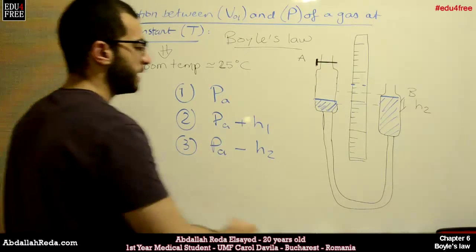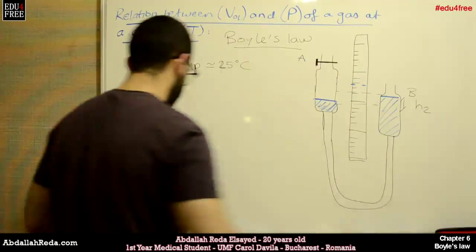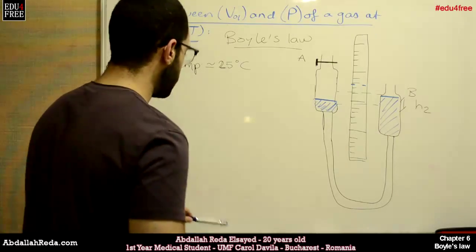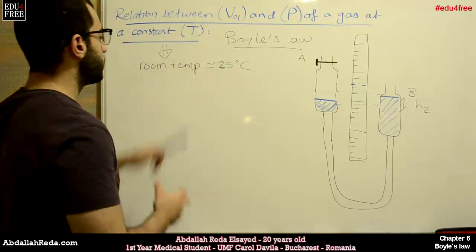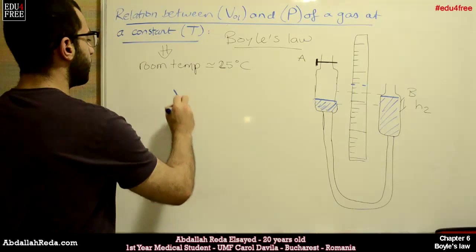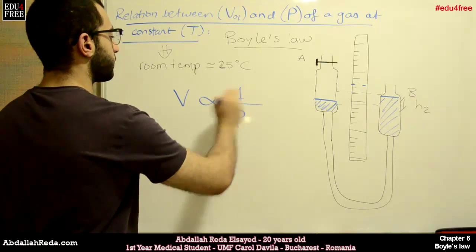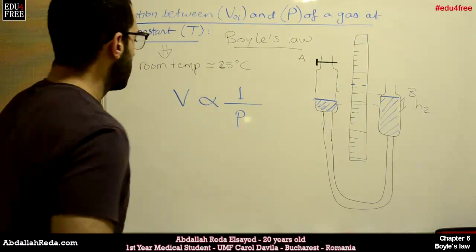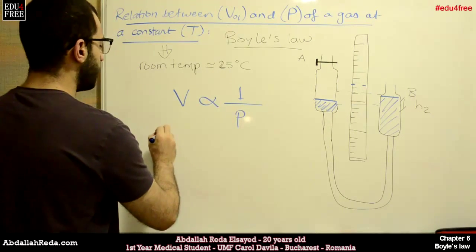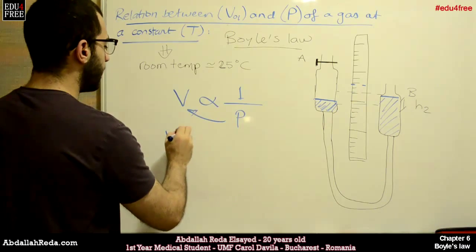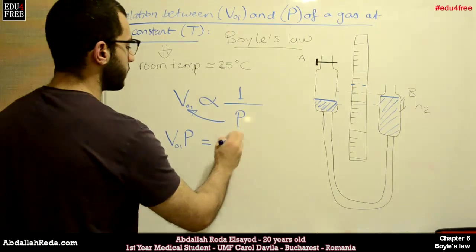So we deduce from that that there is an inversely proportional relationship between the volume of a gas and its pressure at a constant temperature. So we can say that the volume is inversely proportional with the pressure. Like this. And so, we can say that the volume multiplied by the pressure equals a constant.